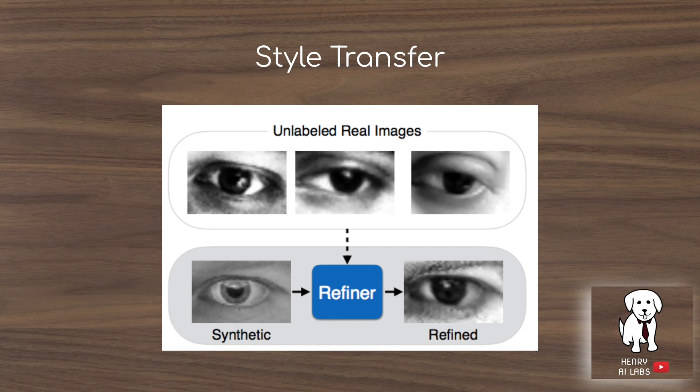On the opposite end, rather than going for diversity, the SimGAN model goes for realism. It takes data from a graphics engine like Unity and uses a GAN to align the generated data from the graphics engine with the original training set.